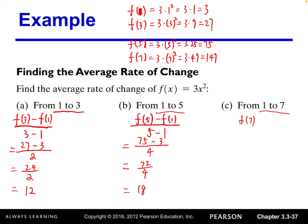For part c, the same process: numerator is the difference of two y's, denominator is the difference between two x's. f(7) = 147 minus 3 over 7 minus 1 = 6. That's 144 divided by 6 = 24. So the average rate of change from 1 to 7 equals 24.